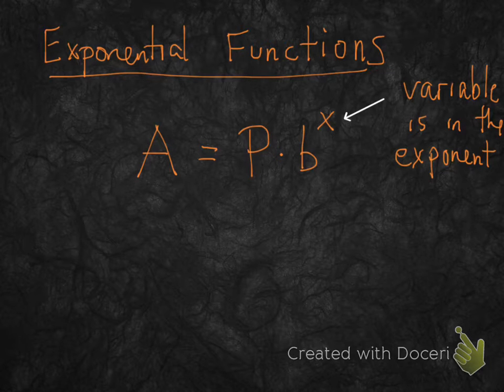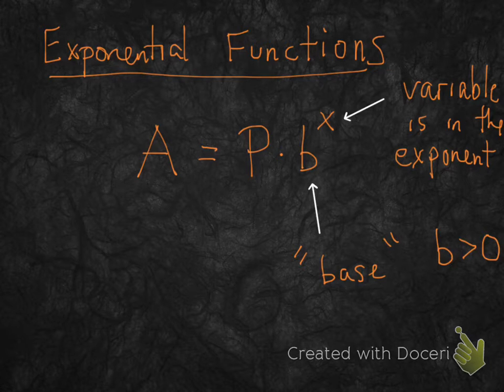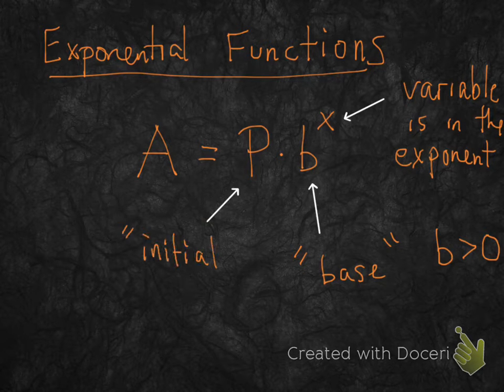Now p and b are just numbers, well they are in general, and they are given names. b is called the base, and that's always got to be a number bigger than 0. Can't be a negative number there. p can be any number. That's just called the initial amount.